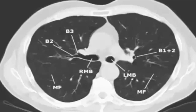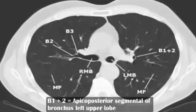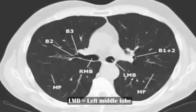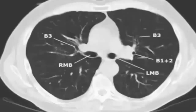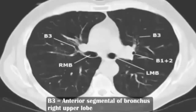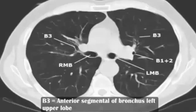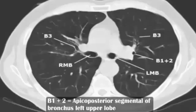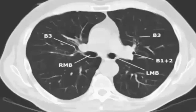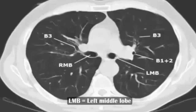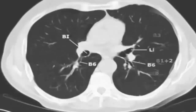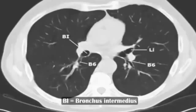B1+2: apico-posterior segment of bronchus, left upper lobe. LMB: left middle lobe bronchus. B3: anterior segment of bronchus, right upper lobe. RMB: right middle bronchus. B3: anterior segment of bronchus, left upper lobe. B1+2: apico-posterior segment of bronchus, left upper lobe. LMB: left middle lobe bronchus. B3: bronchus intermedius.